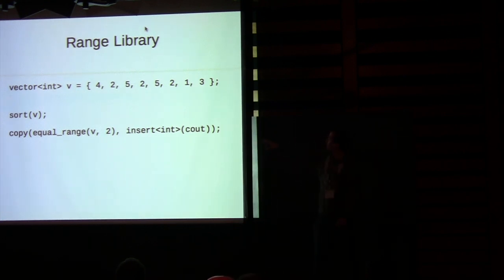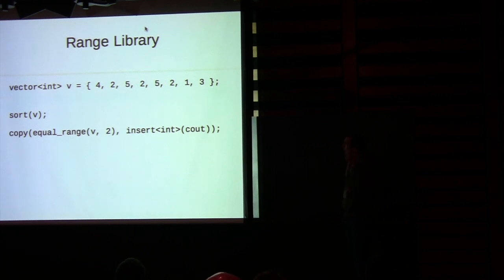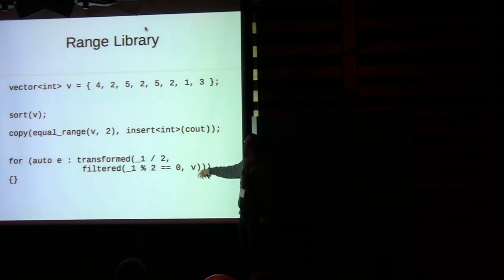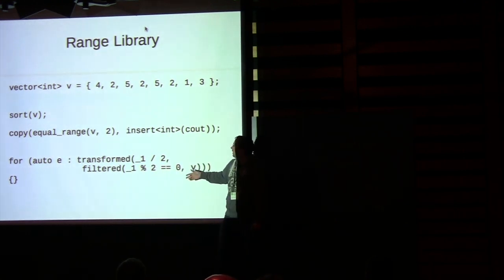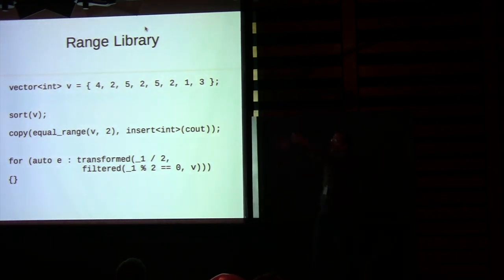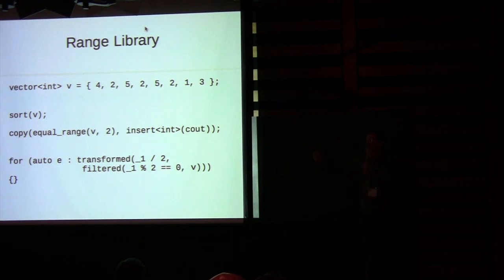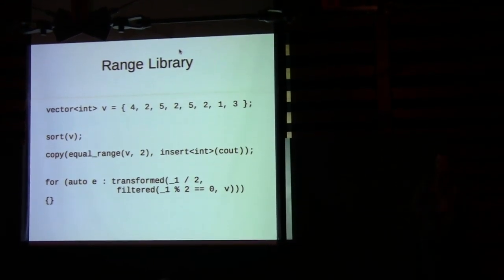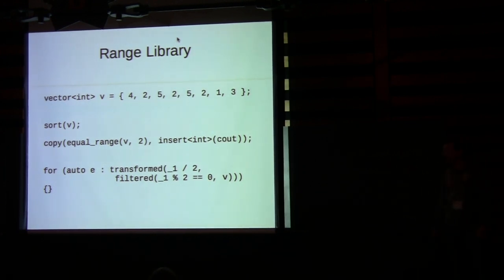We want equal_range to return something we can directly pass on to another algorithm like copy. We also want what's called adapters — lazy operations. For instance, given a vector of integers, I want to filter it to only even values, then transform those by dividing by two, then iterate or pass results to an algorithm — all lazily, without additional storage, skipping non-even elements on the fly as we iterate.